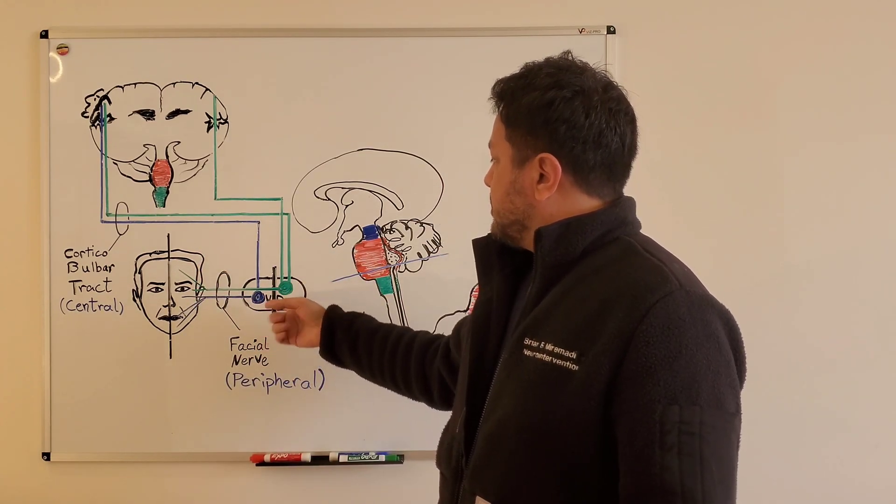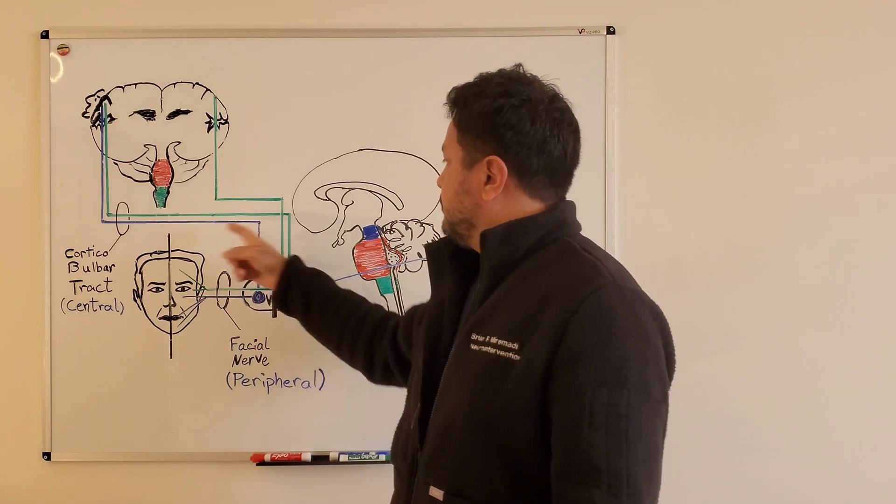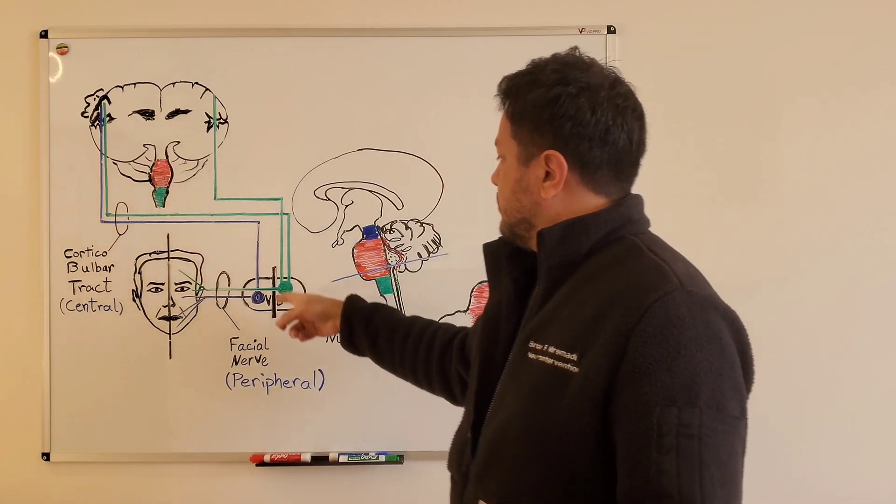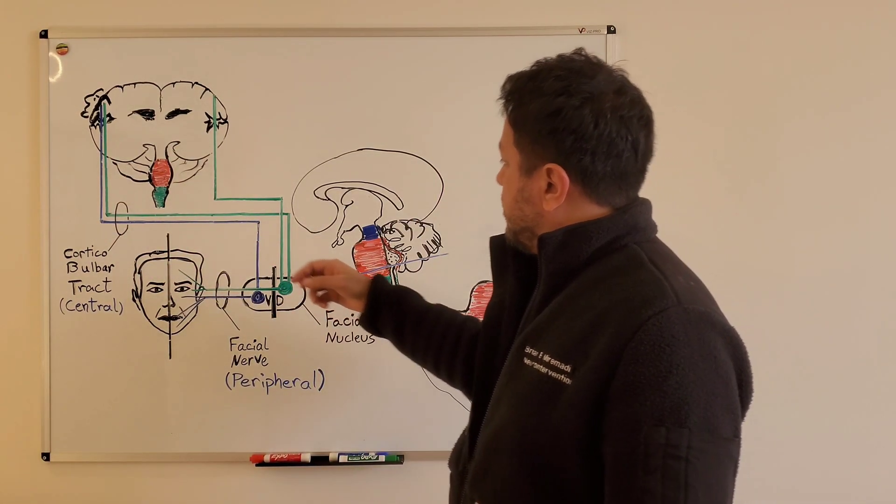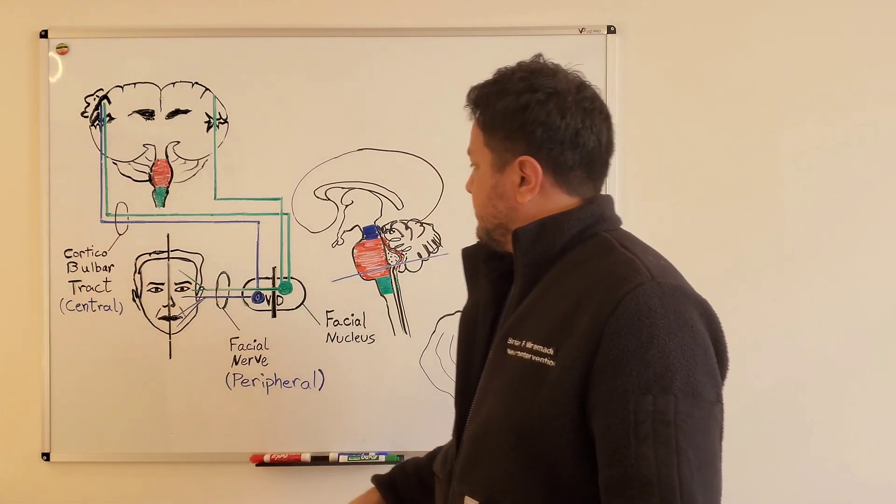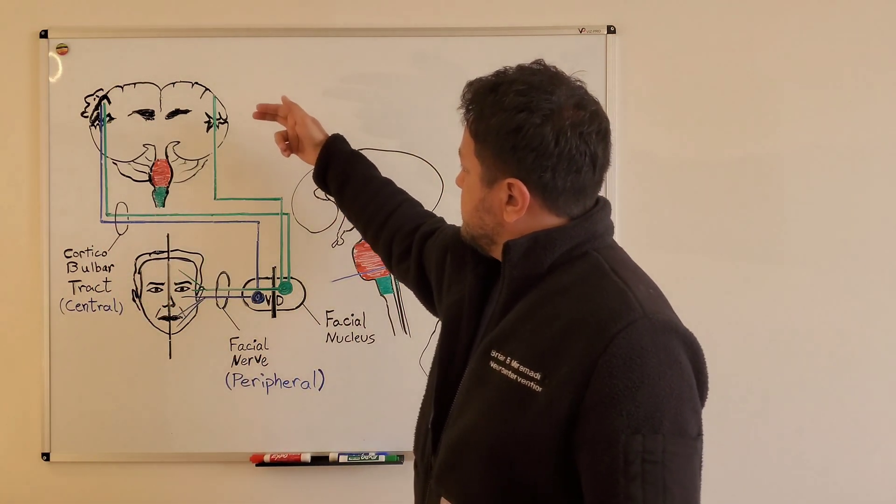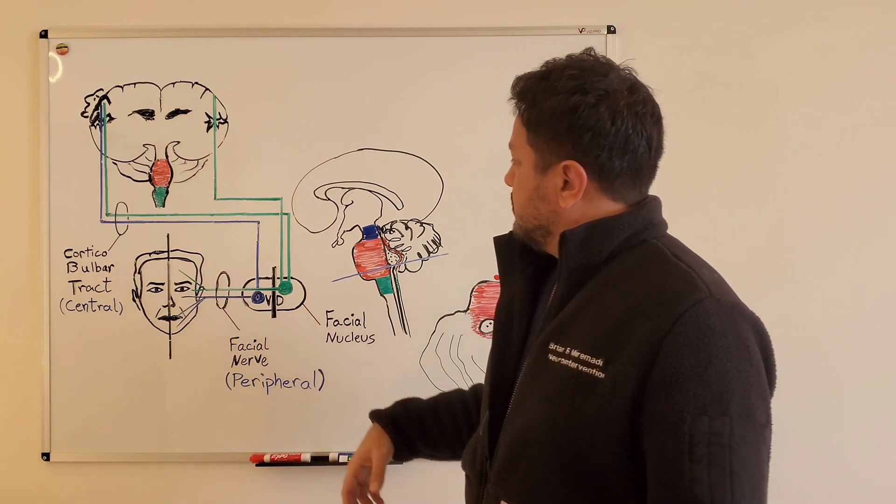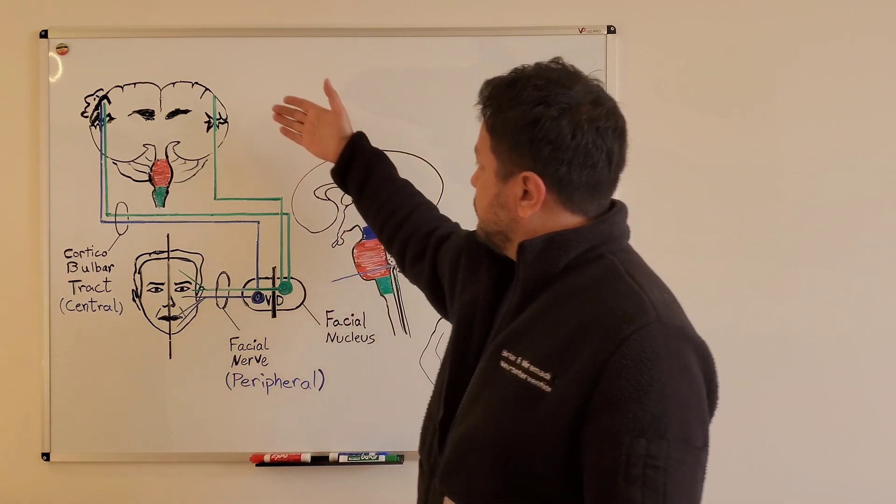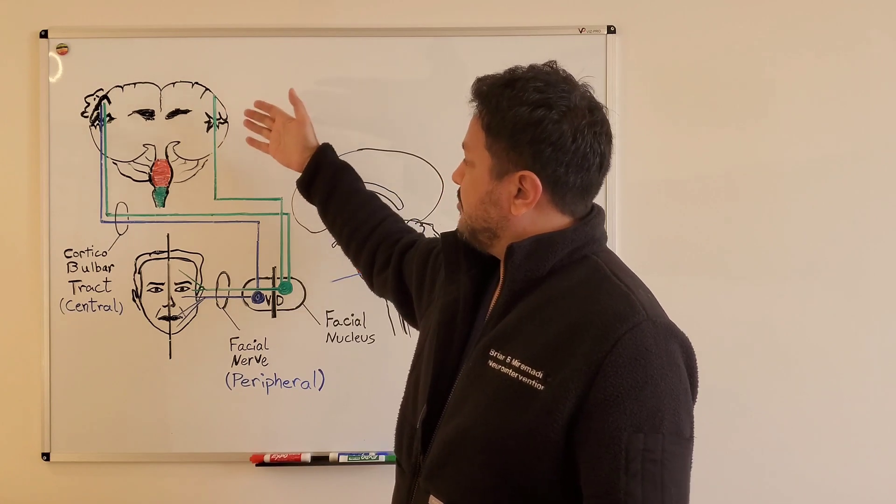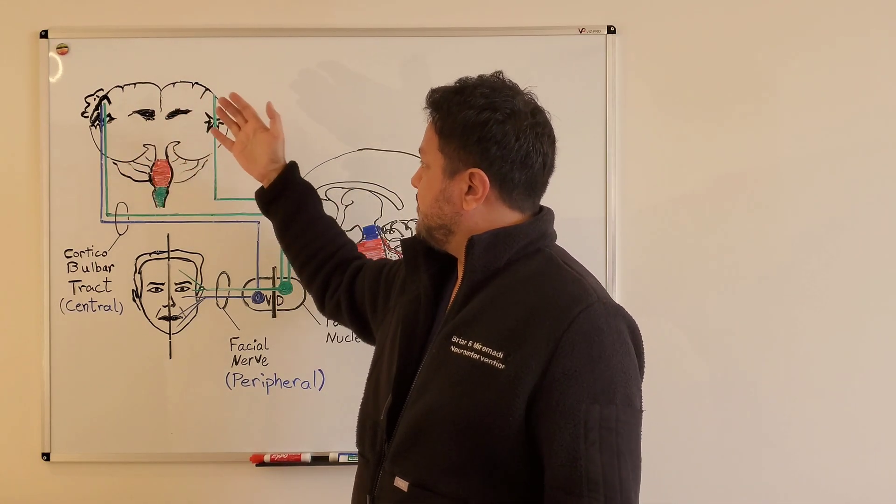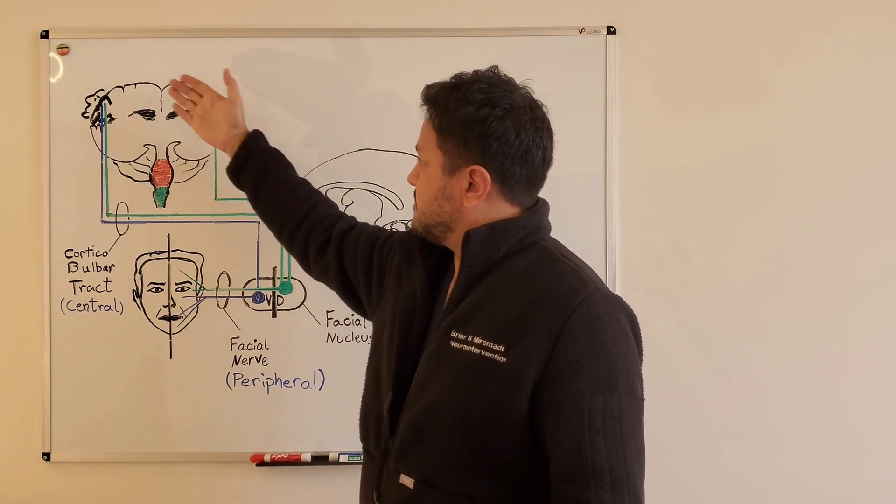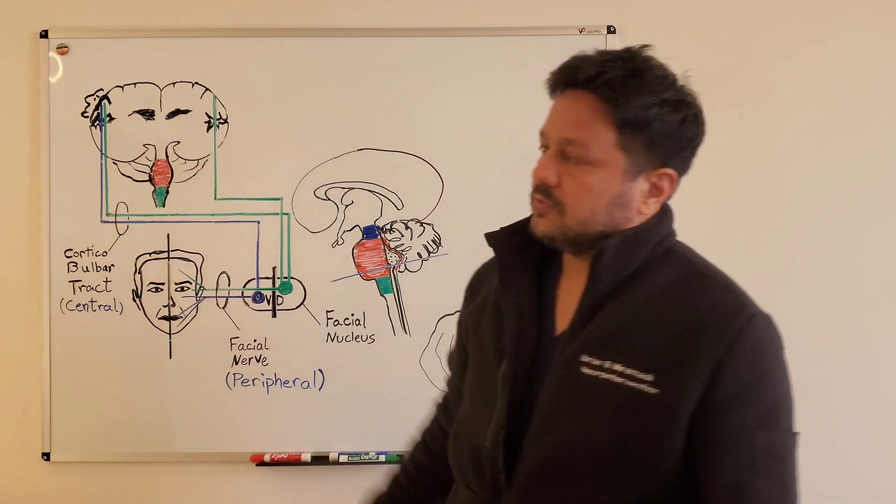The ventral part receives information from the contralateral cortex coming through the corticobulbar tract. The dorsal nucleus of the facial nucleus will receive both pathways from the ipsilateral cortex as well as the contralateral cortex.